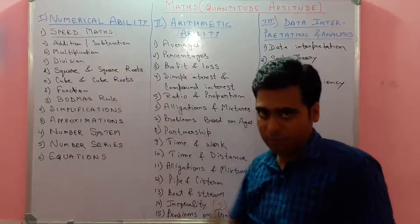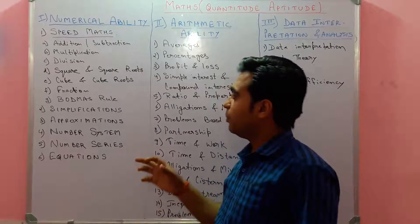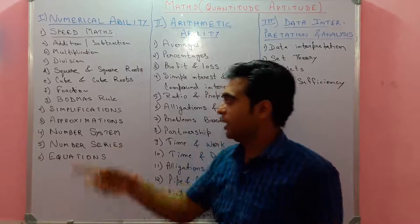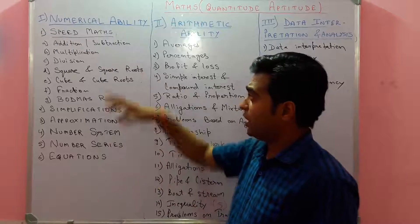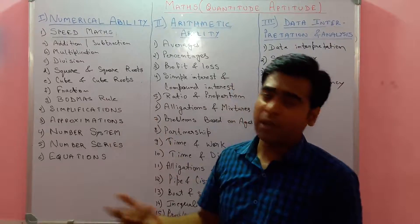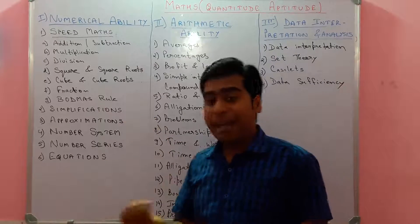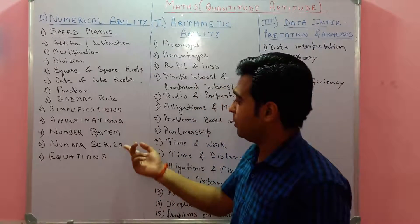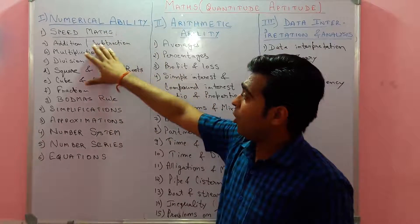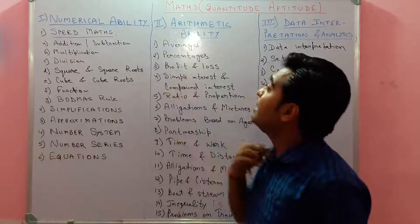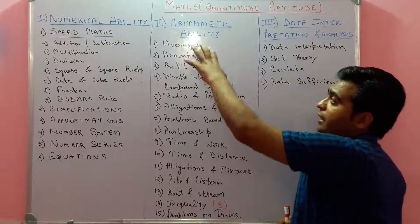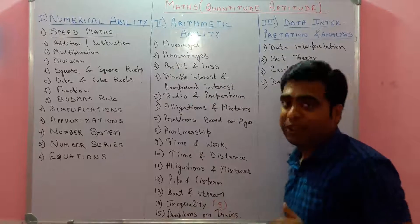In simplification, all types of calculations come in one question — multiplication, division, addition — all together. If you cover speed math, you already know simplification and approximation as well. Similarly, number system and number series — the important thing in this section is all these calculations. Now let's discuss arithmetic ability.